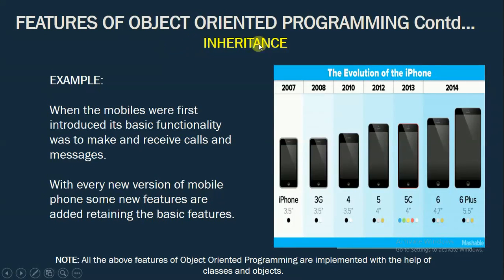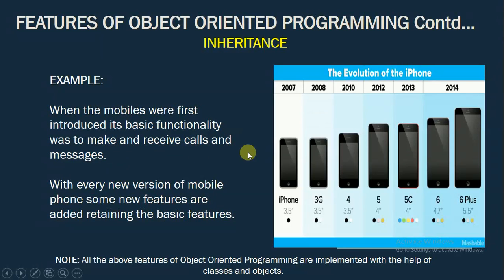Let us understand inheritance with the help of an example. When the mobile phones were first introduced, the basic functionality they offered was only to make and receive calls and messages. And with the evolution of the iPhone, as you can see here, the features of the phone are increasing day by day. With new versions of mobile phones coming up, all of them have added functionality besides the basic functionality of making and receiving calls and messages.